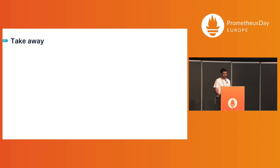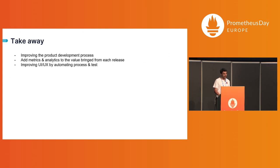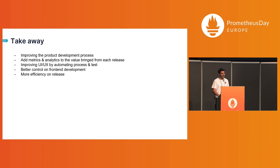The takeaways are that we wanted to improve our product development process, so we needed a fast and automated way to address performance issues — and this was our best solution. We also wanted to add metrics to our deploy pipeline; we do about three, four, or five deploys per day across every environment and team. And we wanted to improve user experience and interface as we migrate from a monolithic to a micro-frontend architecture, with better control over frontend development and more efficient releasing.